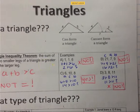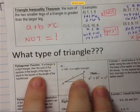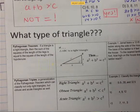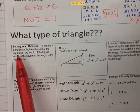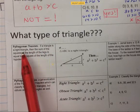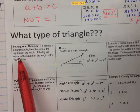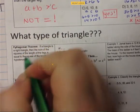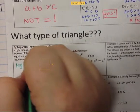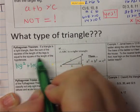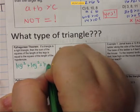Once you determine it is a triangle, you can determine what type of triangle. One theorem you might have heard of is the Pythagorean theorem. It states that if a triangle is a right triangle — and the Pythagorean theorem only works for right triangles — then the sum of the squares of the lengths of the legs equals the square of the length of the hypotenuse: leg squared plus leg squared equals hypotenuse squared.